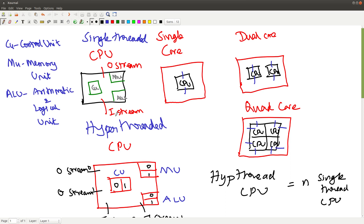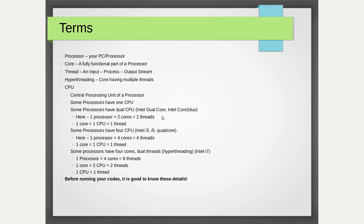Usually CPUs have one input stream and one output stream — so single-threaded. In the olden days, a processor had only one CPU, so there wasn't much complexity. But with the advent of dual-core and quad-core processors, the definition has been slightly modified. Some processors these days have two, four, eight, or sixteen CPUs. For instance, the Intel dual core or Intel Core 2 Duo is slightly older technology but still relevant.